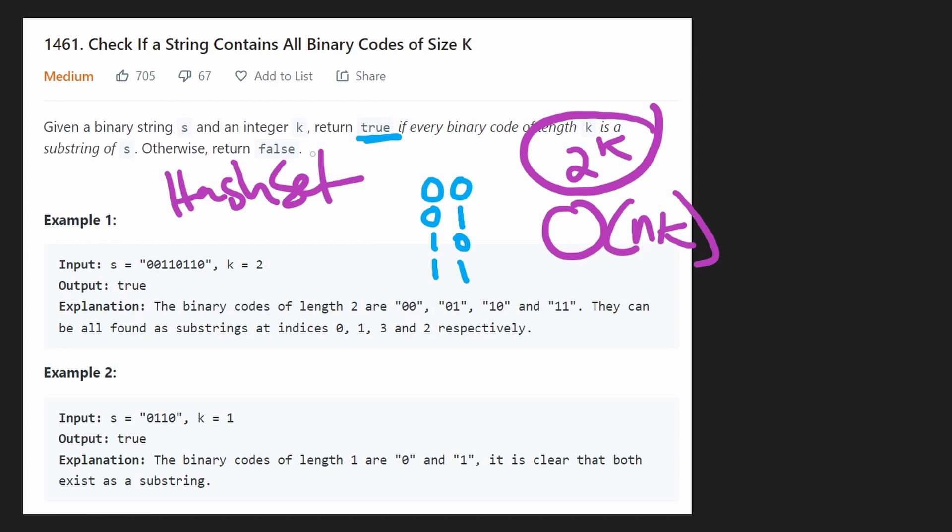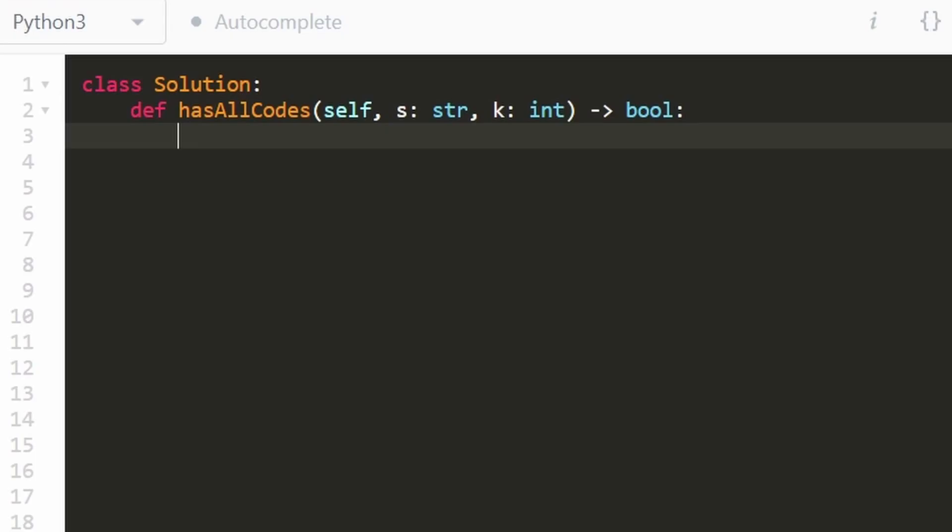Okay, with that said, now let's jump into the code. It's pretty easy. While figuring out the solution might be easy, the good thing is that writing the code is pretty easy once you've done that. So the first thing we're going to do is create that hash set. I'm going to call it our code set, basically counting the unique codes of size K that we have in our string S.